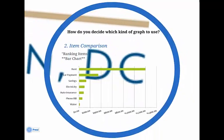The next type of comparison that we'll look at is the item comparison. This simply means ranking items, in this example, from highest to lowest. For this type of comparison, the book suggests using a bar chart.